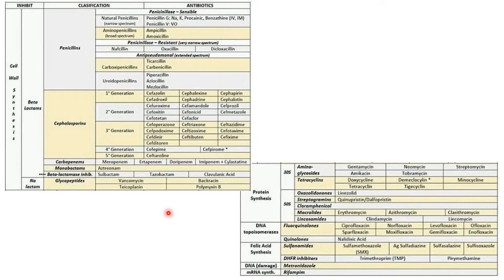On this slide you can see a table for classifying antibiotics with examples. Antibiotics inhibiting cell wall synthesis are grouped as beta-lactams. Beta-lactams have subgroups: penicillins and cephalosporins as major ones, then carbapenems and monobactams. There are also beta-lactamase inhibitors. Within penicillins you can see natural penicillins, aminopenicillins, and penicillinase-resistant penicillins.